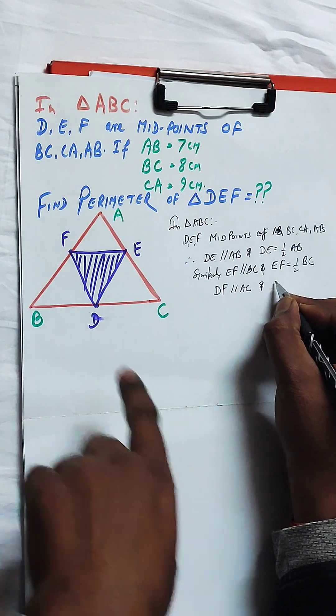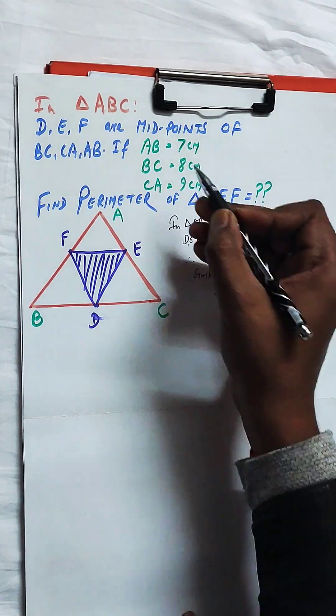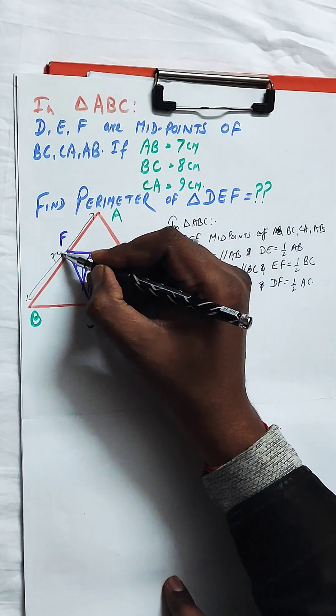Similarly, EF is parallel to BC and that EF is also half of BC.